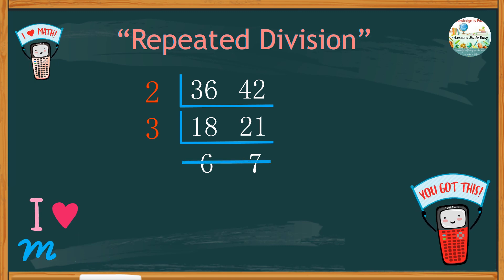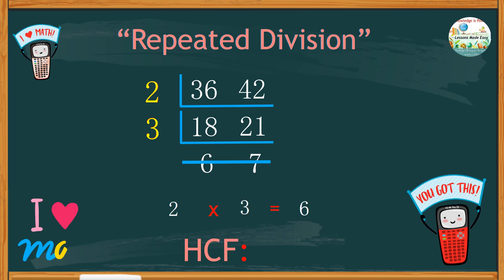Just ignore these uncommon factors. And the last step is to take the product of the common factors which are 2 and 3. 2 times 3 is 6. Therefore, the highest common factor of 36 and 42 is 6.